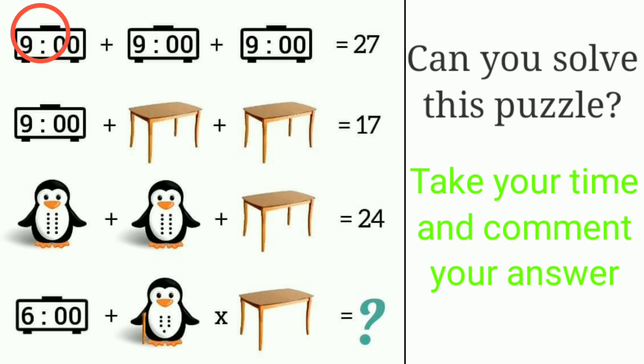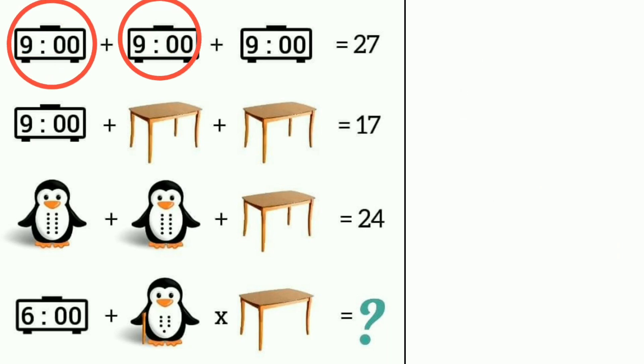Look at equation 1. Here is 9 o'clock, another also 9 o'clock, another also 9 o'clock is equal to 27. It means 9 plus 9 plus 9 is equal to 27. This one we got.